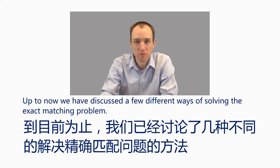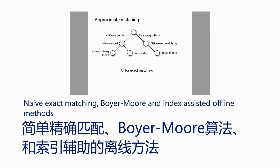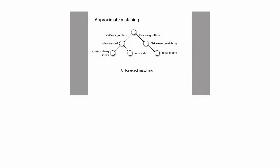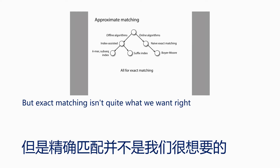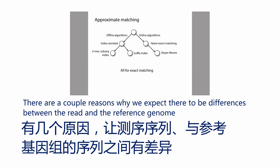Up until now, we've discussed a few different ways of solving the exact matching problem: naive exact matching, Boyer-Moore, and index-assisted offline methods. But exact matching isn't quite what we want. The read will not necessarily match the genome exactly in its point of origin. There are a couple of reasons why we expect there to be differences between the read and the reference genome.